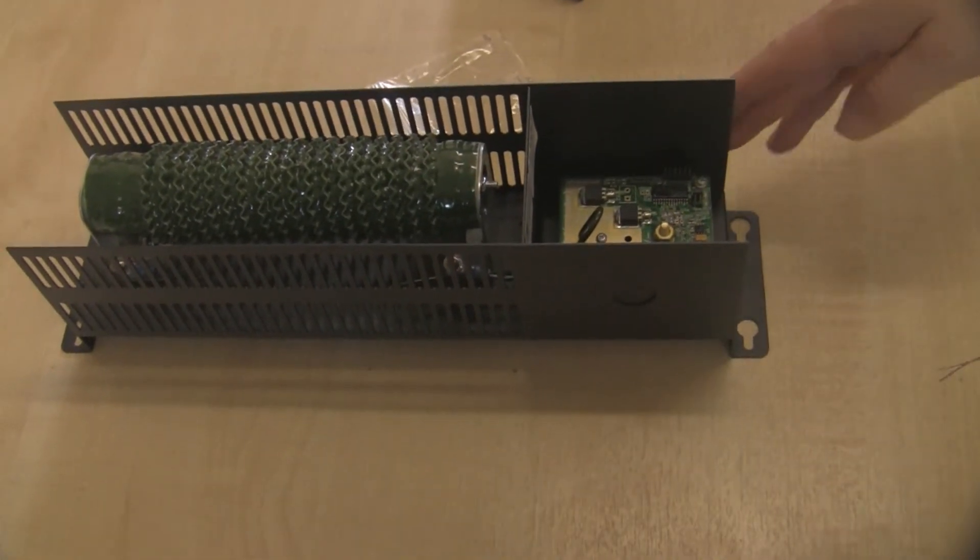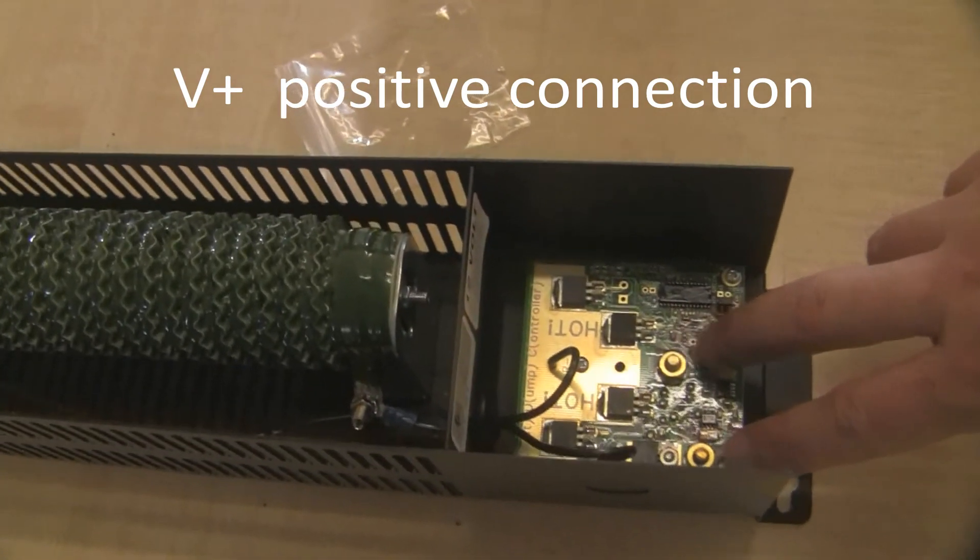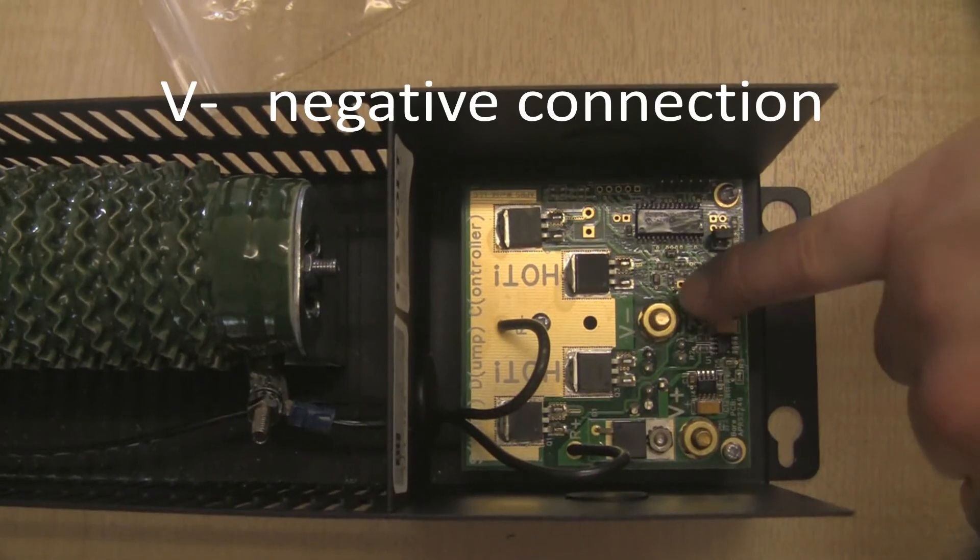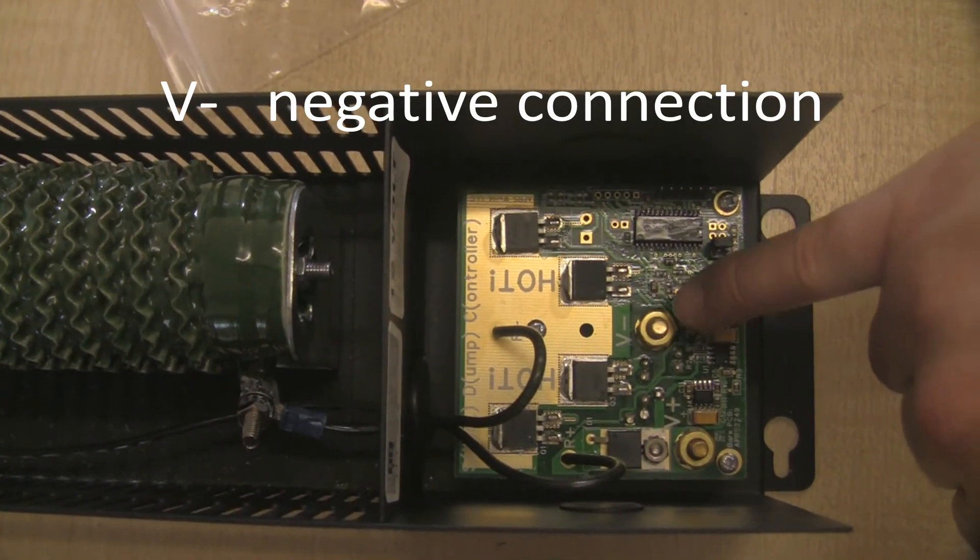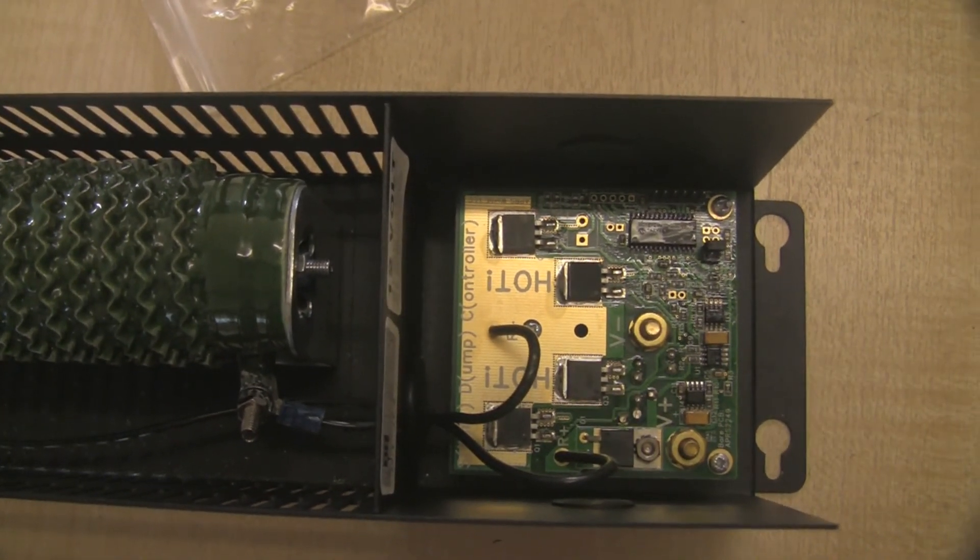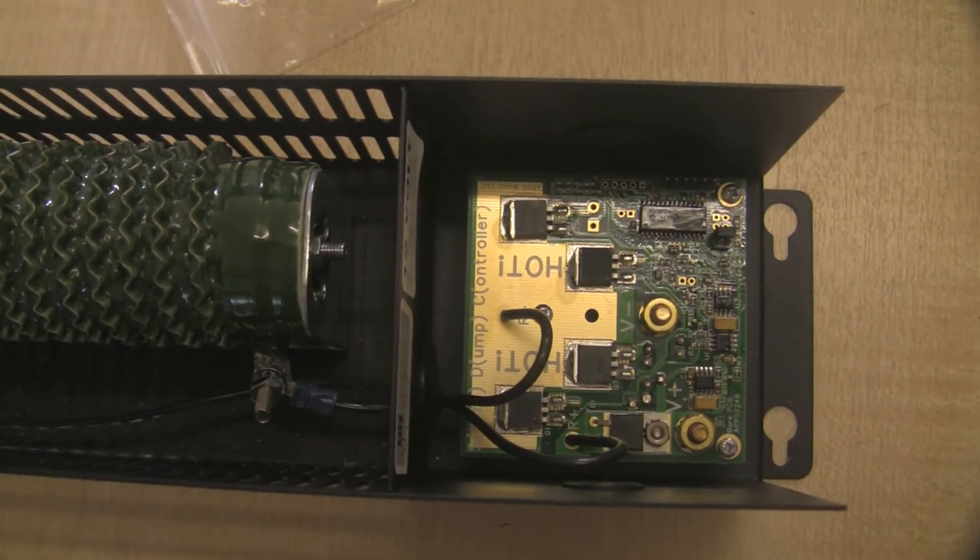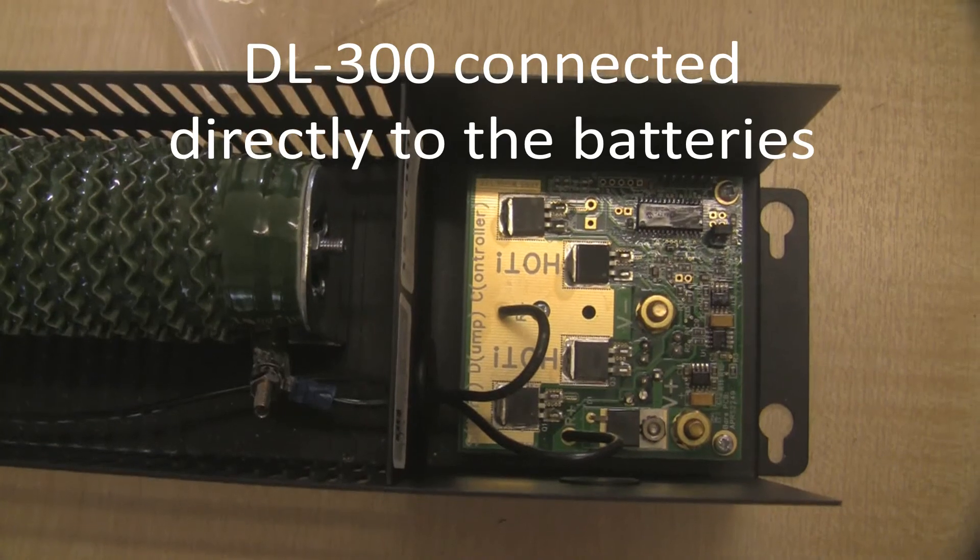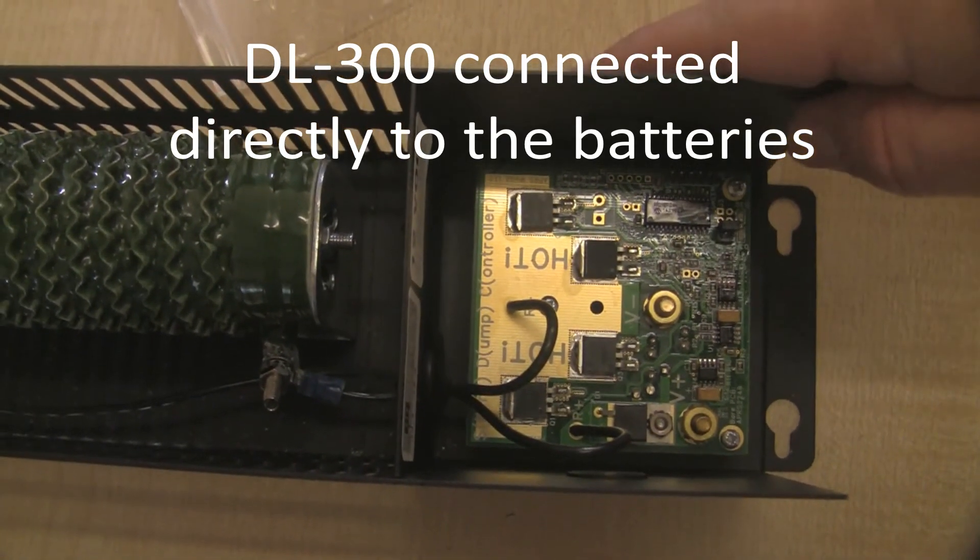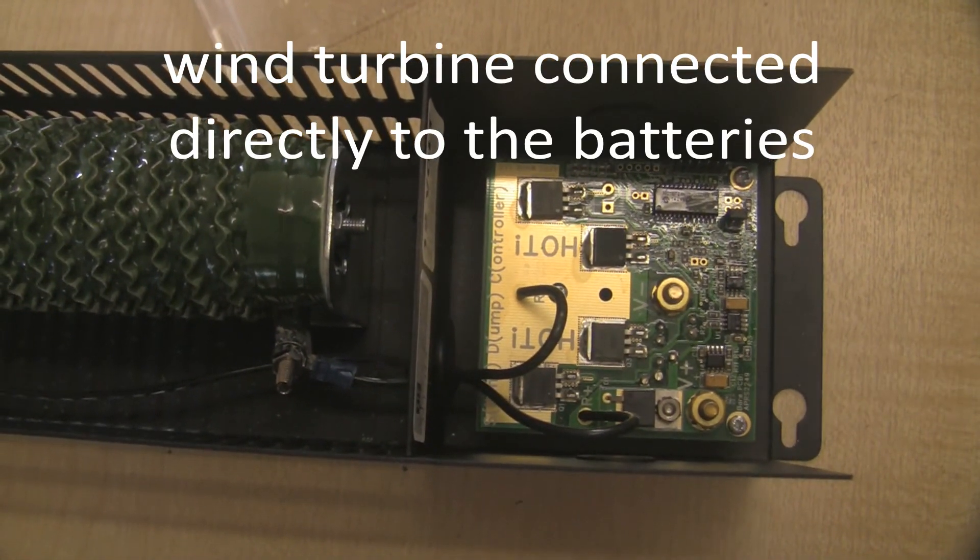Basically speaking, we have two terminals on the circuit board here: one that's labeled V plus which is the positive connection, and one that is labeled V minus which is the negative connection. Now the turbine is not connected at all to this charge controller, that's not how this works. This charge controller is, you should think of it really as an overflow for your batteries, an electrical overflow for your batteries. So this charge controller is connected directly to the batteries, and then the wind turbine is connected directly to the batteries also.